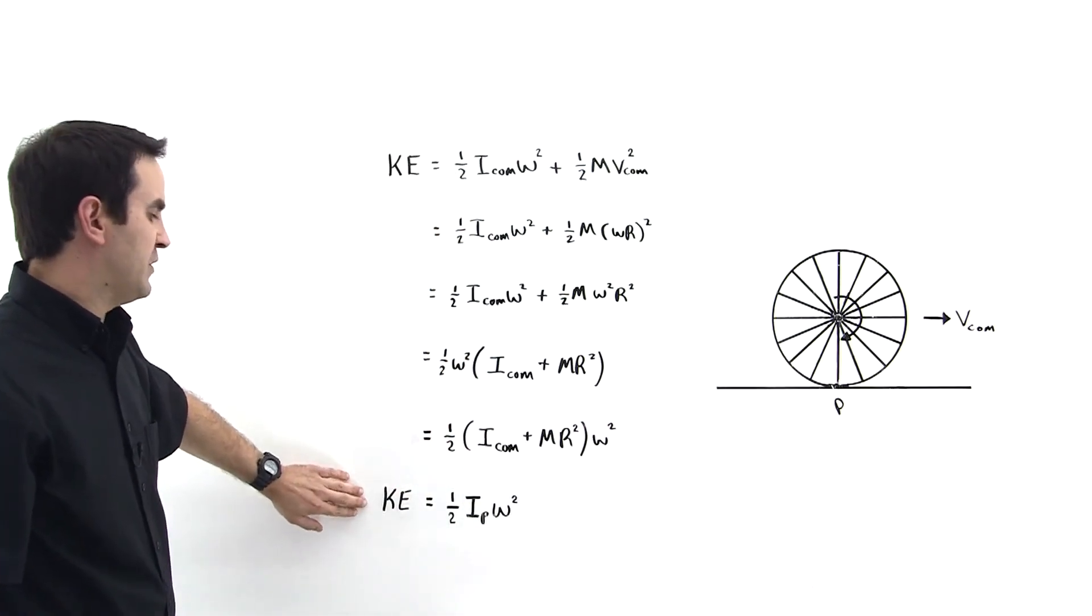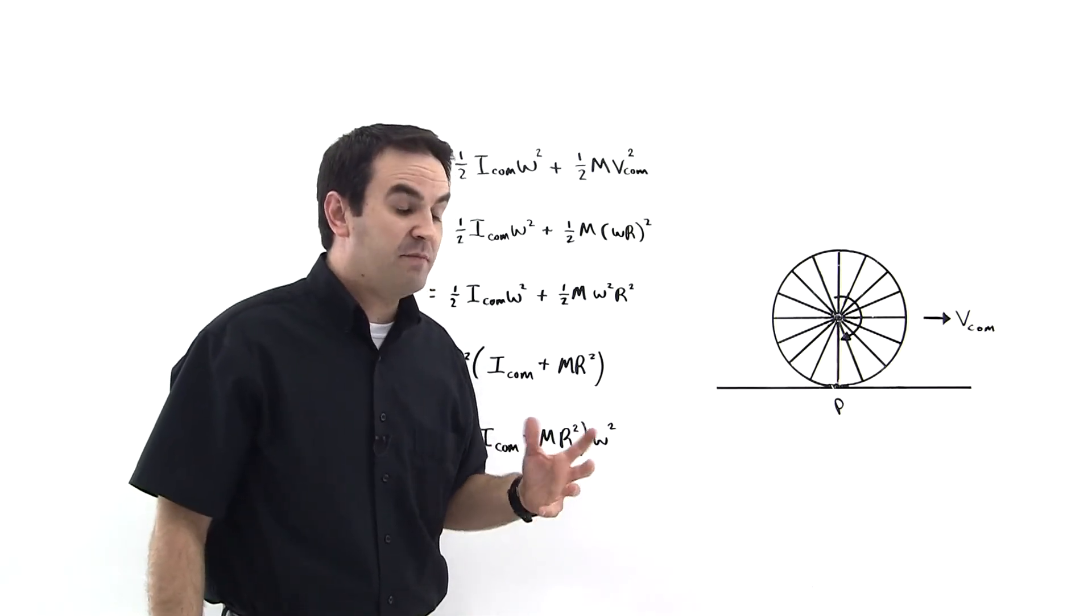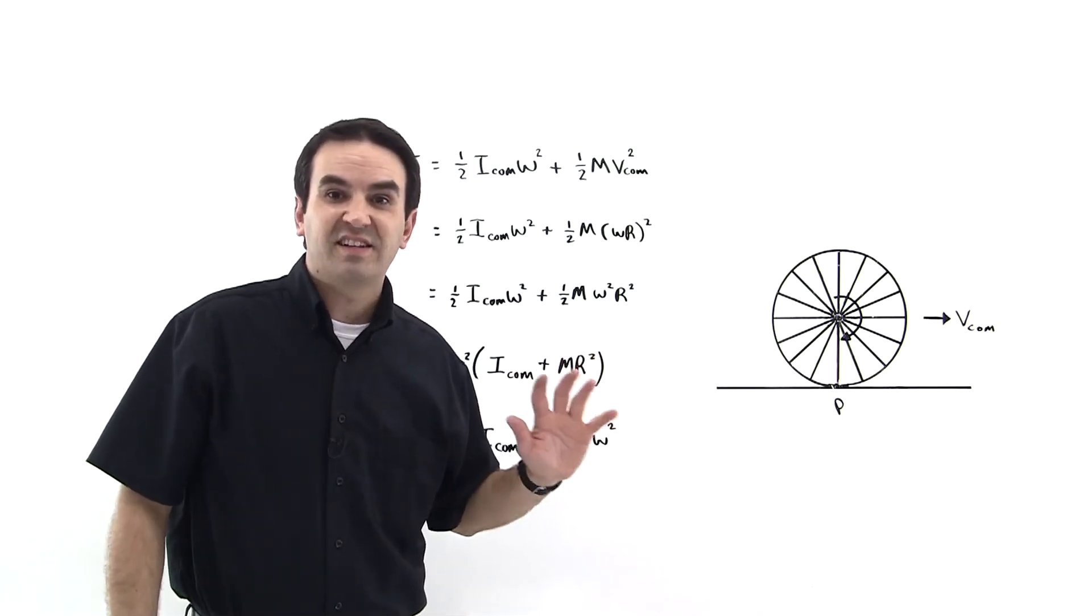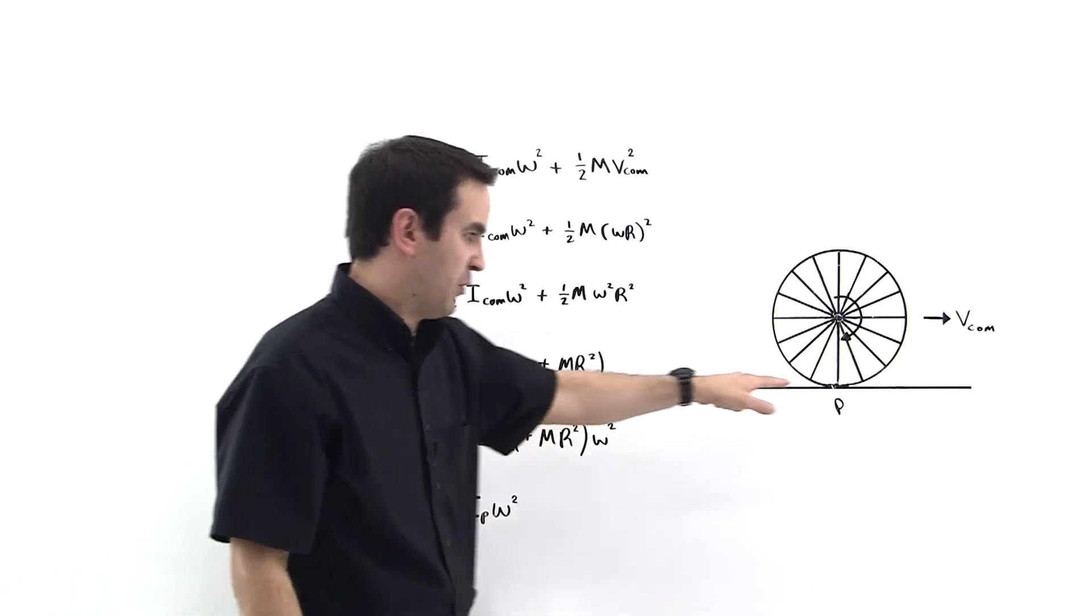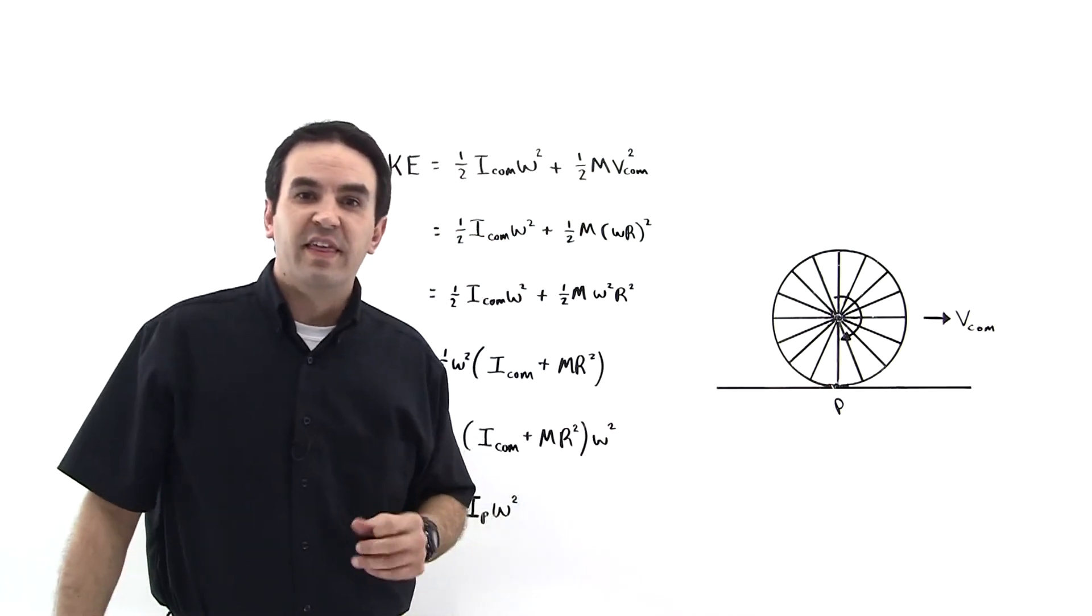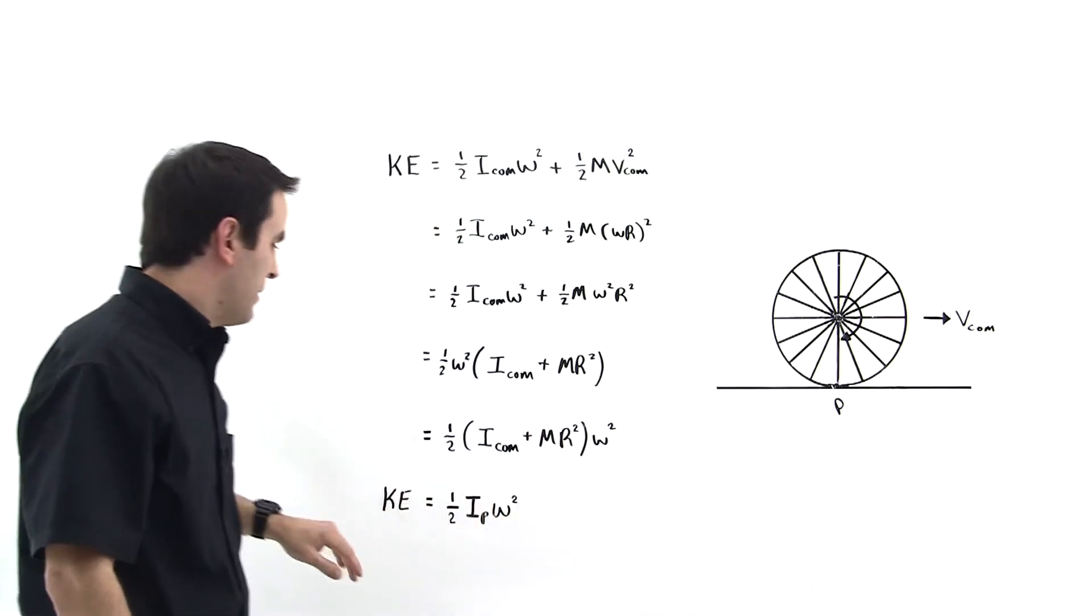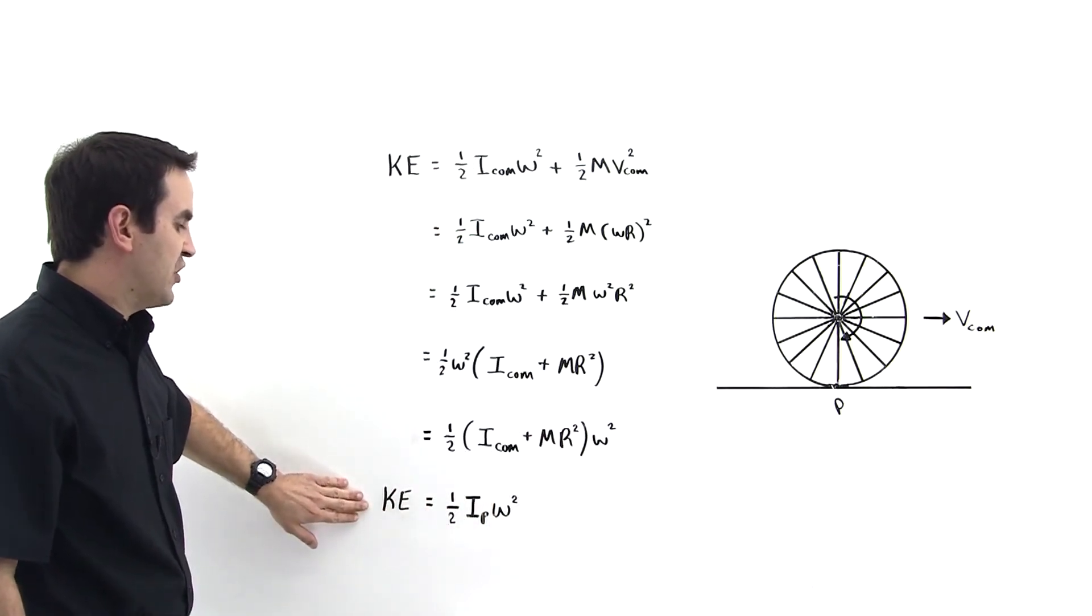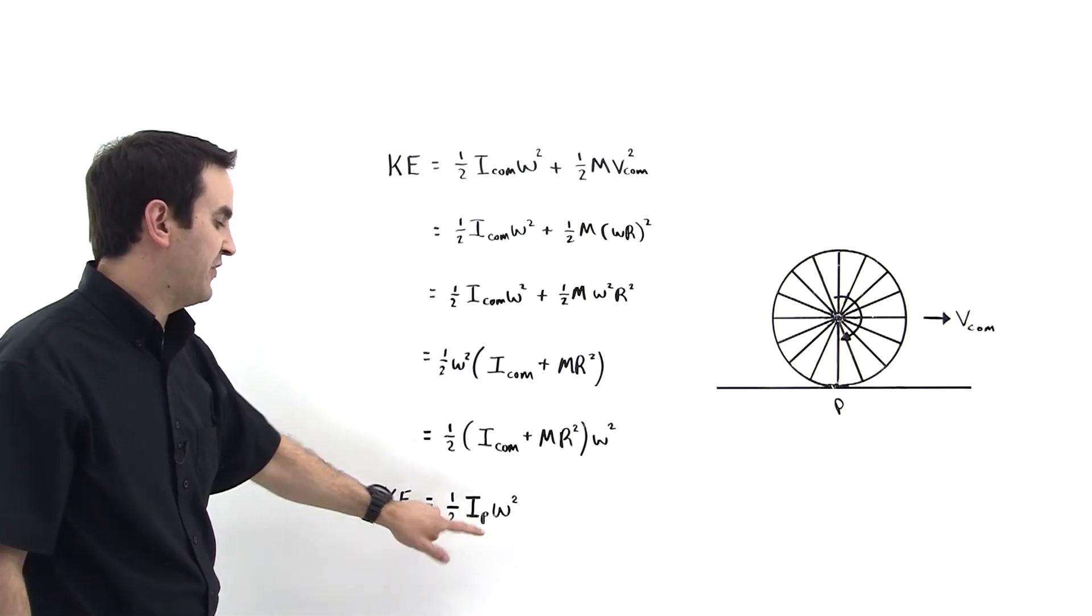So this is an important result. This tells us that if we have the moment of inertia of an object about some axis and that axis is not moving, which this point is not, then we can take into account the entire kinetic energy of the object by writing down one kinetic energy term as long as we take into account the moment of inertia about that fixed axis.